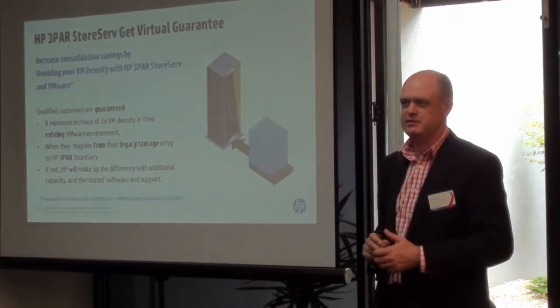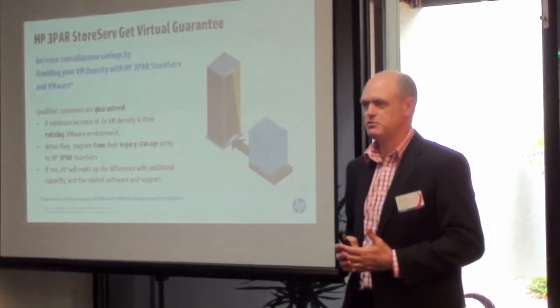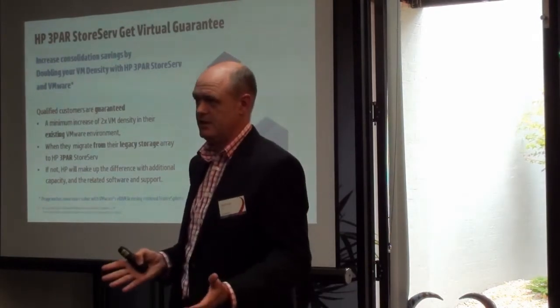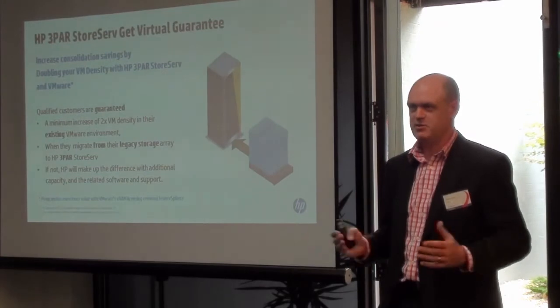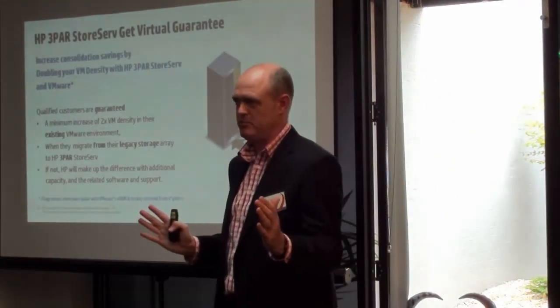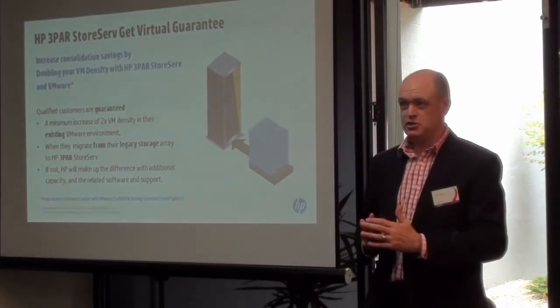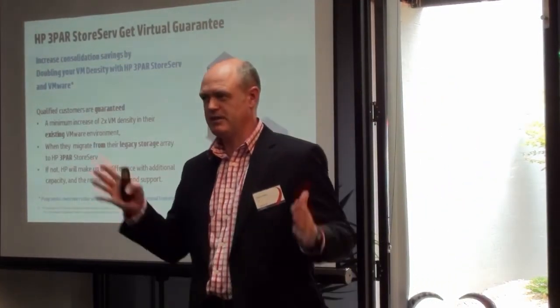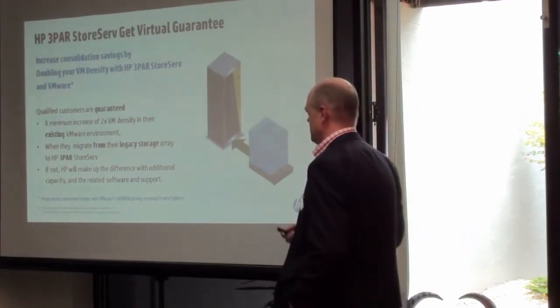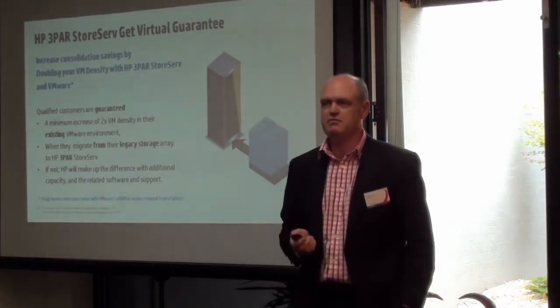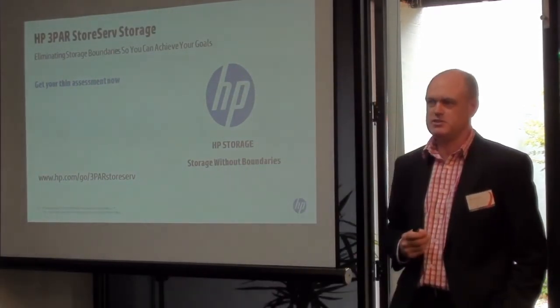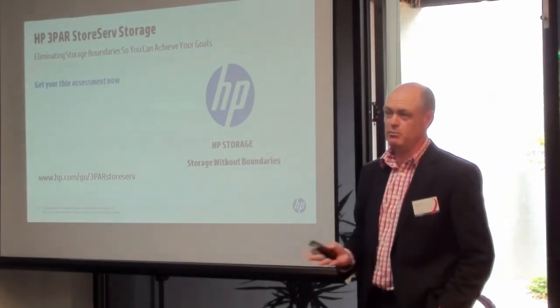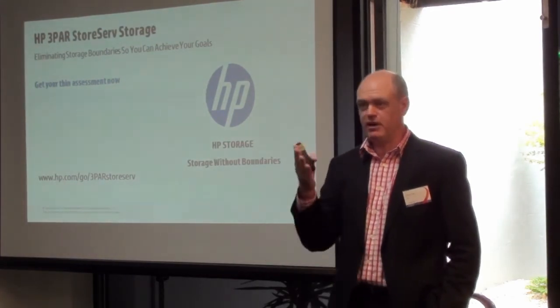Sometimes a customer says 3PAR didn't live up to expectations, and when we ask what tier of storage they used, they've put all their performance LUNs on Nearline, thinking there's some magic cure. Now, you can run an all-Nearline 3PAR — 1,920 2TB Nearline drives on a 10,800, stripe across everything, and get massive bandwidth — but I probably wouldn't recommend that because you need about six floor cabinets. We try and right-size it. We can measure and capture your current rate of efficiency, identify waste in your environment, show where savings can be derived, and map your path forward.